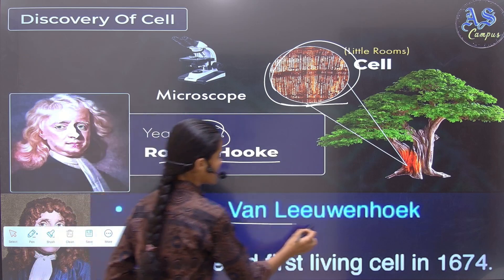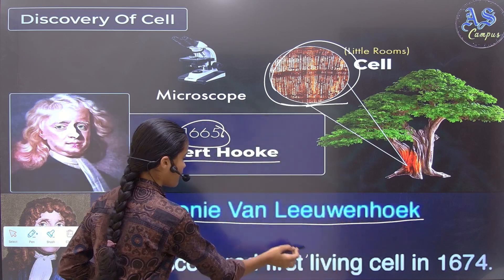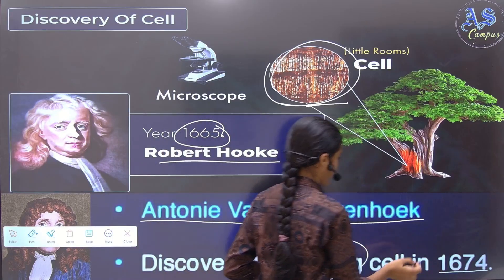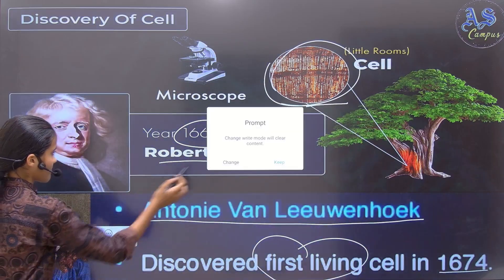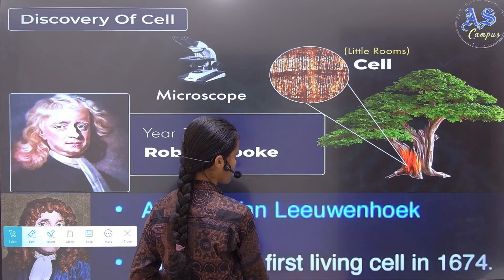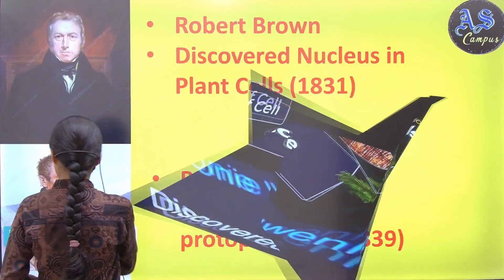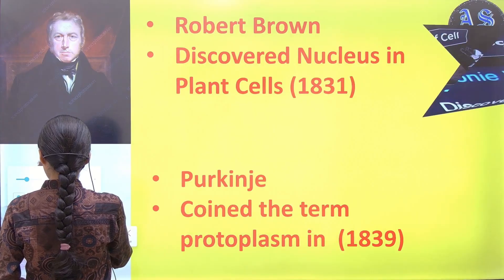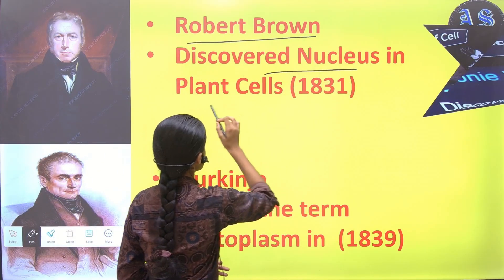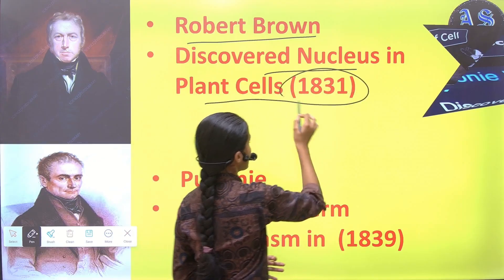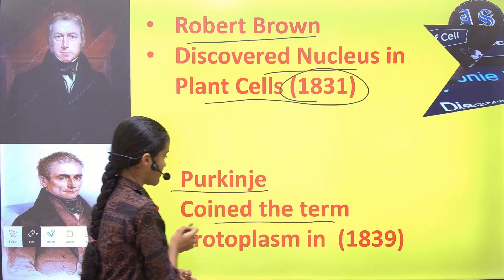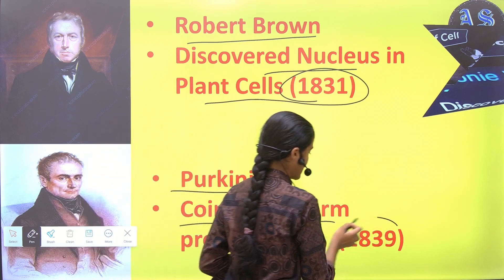Then, Antony Van Leeuwenhoek discovered the first living cell in the year 1674. Robert Brown discovered the nucleus in plant cells in 1831, and Purkinje coined the term protoplasm in 1839.